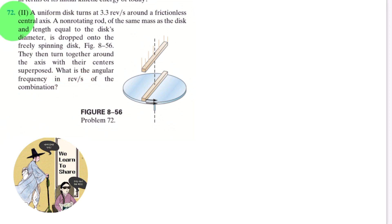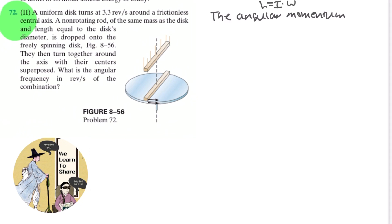First of all, we should remember that the angular momentum, which is L equals I times omega, this angular momentum of the disc-rod combination will be conserved, right? Because there is no external torques on the combination.